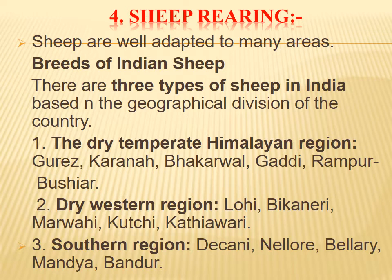For sheep rearing, sheep are well adapted to many areas. There are three types of sheep in India based on geographical division: dry temperate Himalayan region breeds include Goreh, Karanah, Bakrawal, Gadi, and Rampur Bushyar; dry western region includes Lohi, Bikaneri, Marwari, Kutchi, and Kathiawari; southern region includes Deccani, Nellore, Bellary, Mandya, and Bandha.